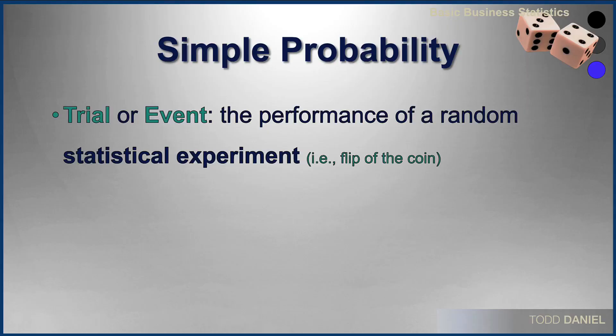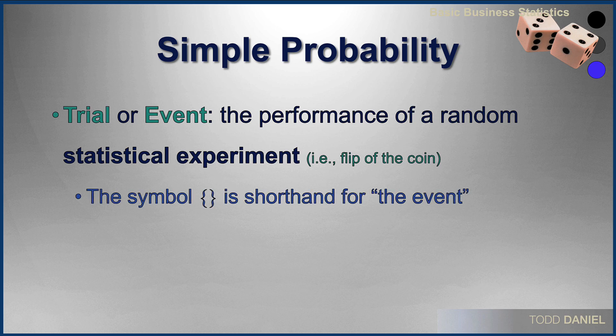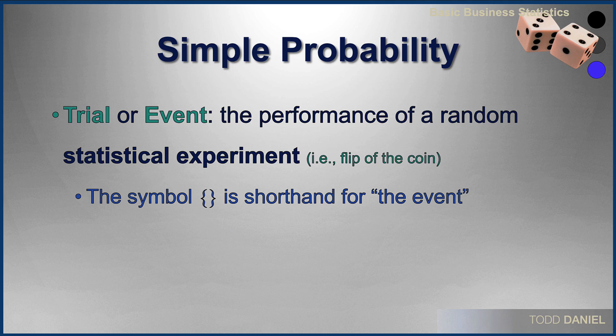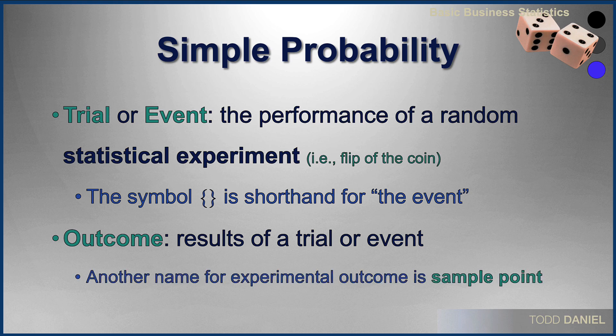A trial, also called an event, is the performance of a random statistical experiment, such as when I flipped the coin. One of two outcomes has already occurred — we just don't know which one yet. We're going to use the symbol with brackets as shorthand for any event, and you will see plenty of examples of what an event looks like in this notation. The outcome would be the results of the trial. Another name for the experimental outcome is a sample point — the sample point is still hidden; we don't yet know what the outcome will be.